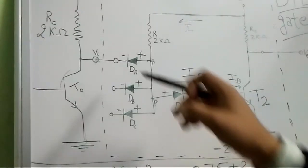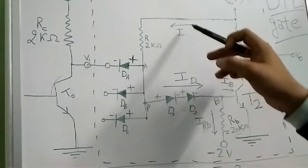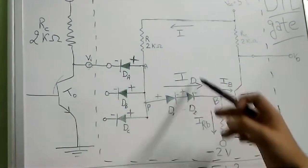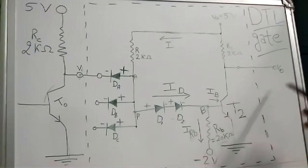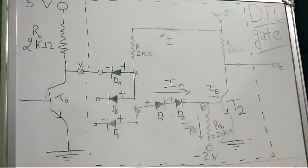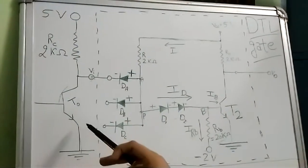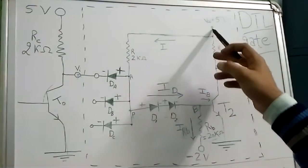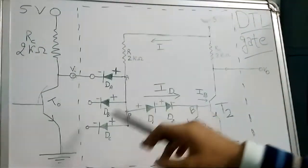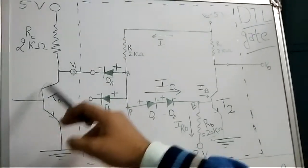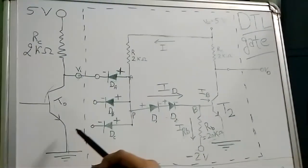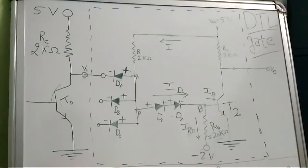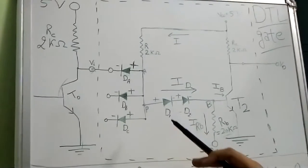If all inputs of this gate are given logic level 0, a larger portion of current flows through the input diodes and Id becomes very small, driving T2 further into cutoff, giving a clear logic level 1 at V0. Also, when T0 is in saturation, the VCC current of the driving gate flows to ground through this transistor — this is called current sinking.